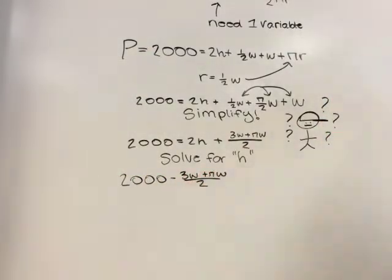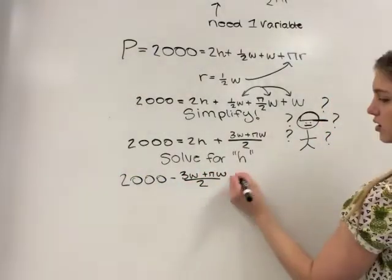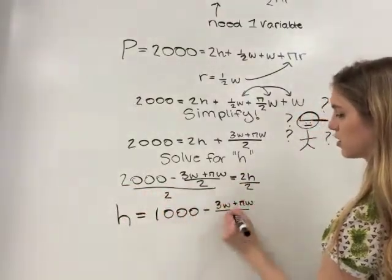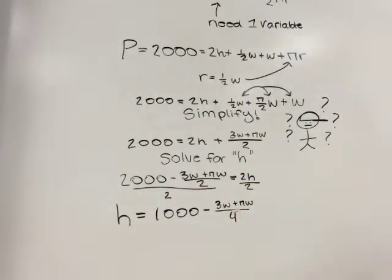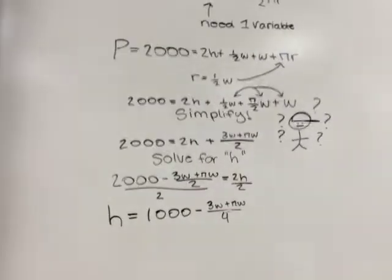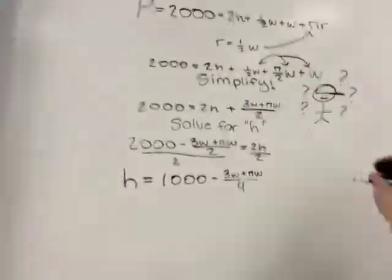Now, we can solve for H. We will subtract the fraction to the other side and divide the whole thing by 2. And we can now see that H equals 1,000 minus 3W plus πW over 2.